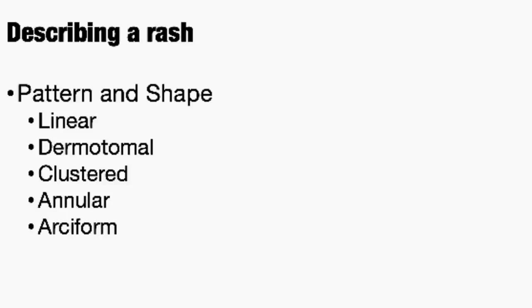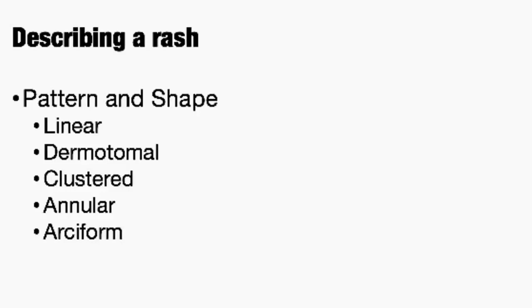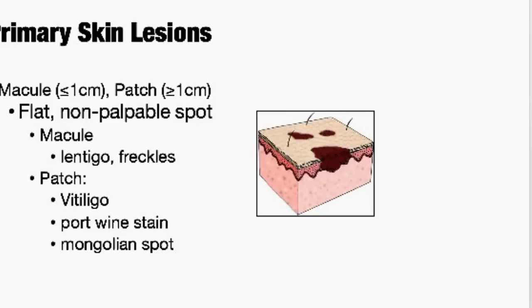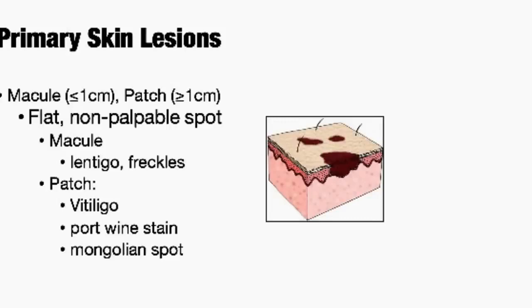Skin lesions can also be classified based on their description and type. A macule and a patch are the same things — just different sizes: macule is small, patch is large. These are flat, non-palpable, even with the skin. Examples include freckles and lentigos, which are those age spots. A patch — something bigger — might be a Mongolian spot or a port wine stain. Here's a picture of a Mongolian spot, which looks kind of like bruising on a child's buttocks and back. And the port wine stain is a permanent birthmark that starts out really pink and turns darker red/purple as the child grows.